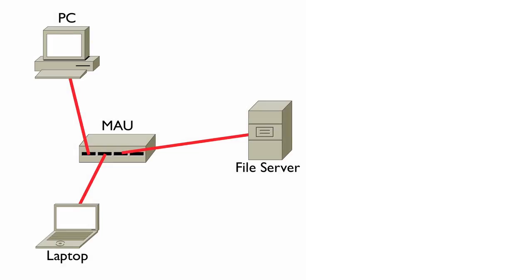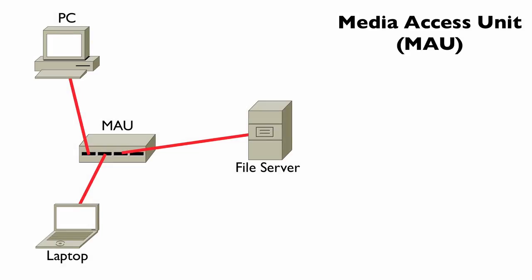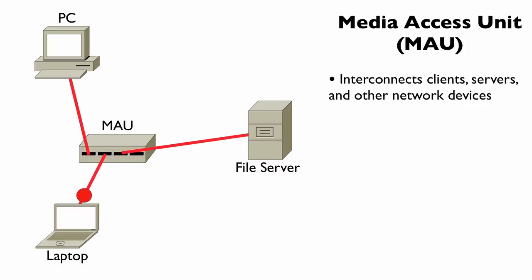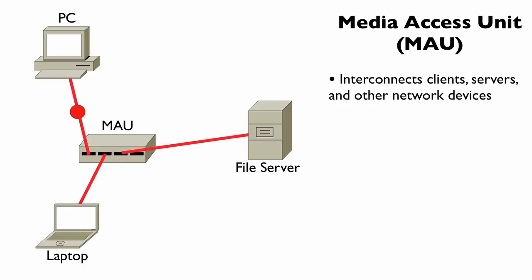The next of our legacy devices that we want to consider is a MAU, a Media Access Unit. A Media Access Unit, much like a hub, could be used to interconnect clients and servers and other network devices, but instead of being used on an Ethernet network, it was used on a token ring network.